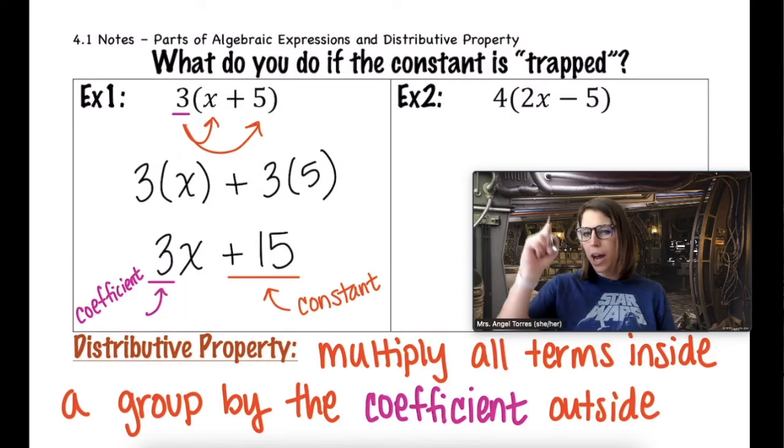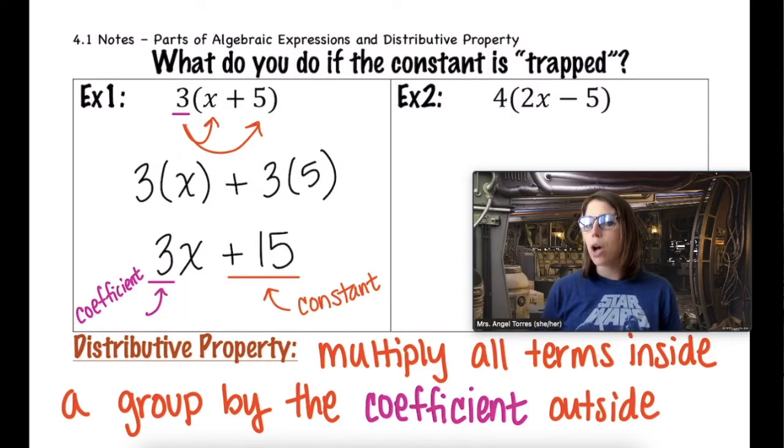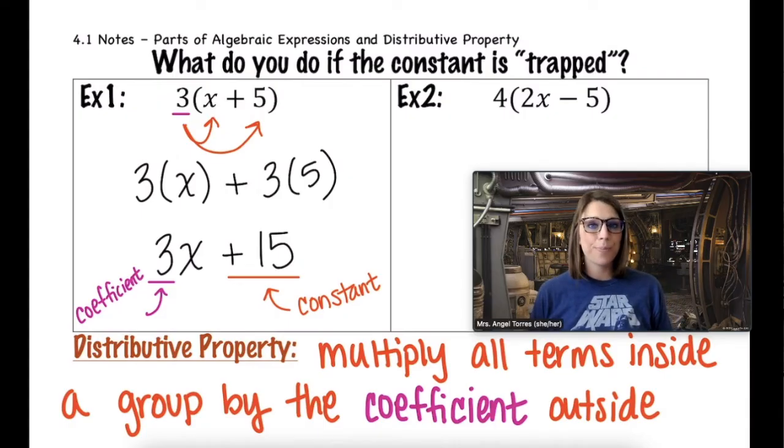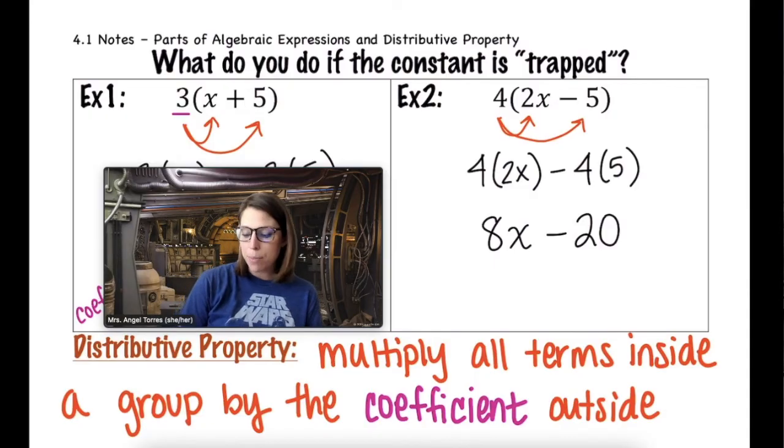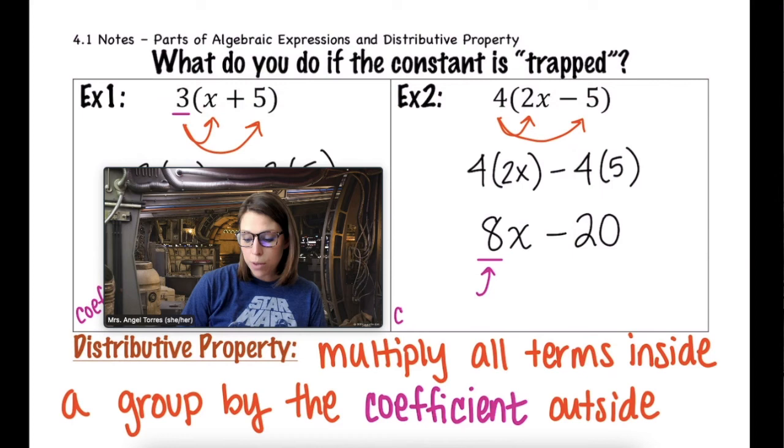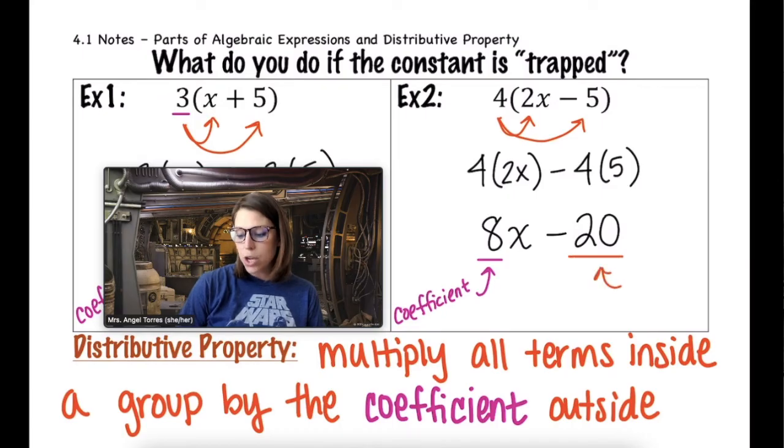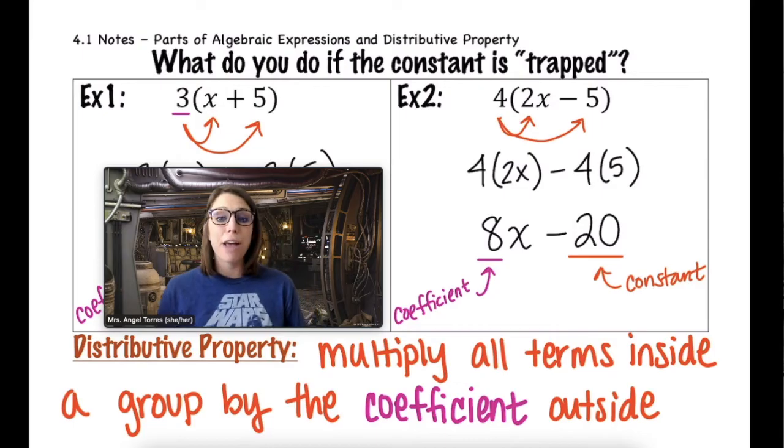Why don't you try example 2 on your own? Free the constant by applying the distributive property. So now that my constant is free, we can label the parts of this expression. 8 is my new coefficient because it is attached to the variable. And 20 is my new constant because I multiplied that 5 by 4.